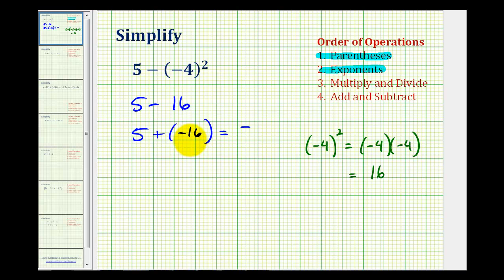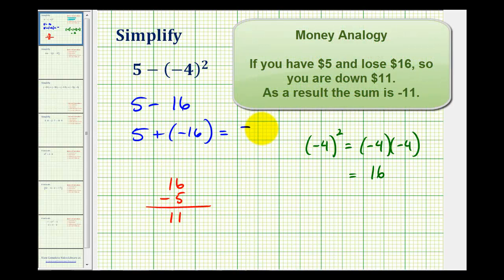The absolute value of negative 16 is 16. The absolute value of five is five, and we'll subtract the smaller from the larger. This gives us positive 11, but we know the sum has to be negative, so this is equal to negative 11.